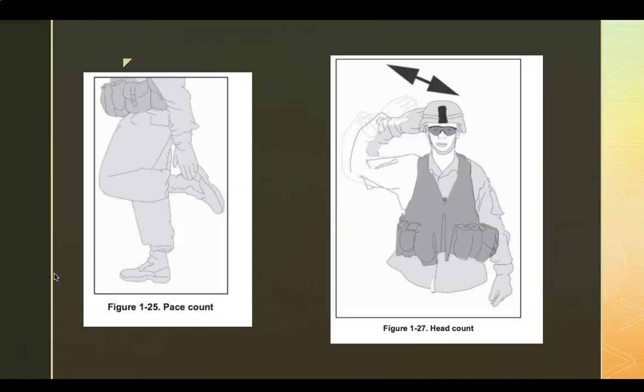Pace count. This is where they are checking their pace, so each formation has a person who keeps pace. Pace count is either when they get to a hundred meters or whatever they're counting, that's just a signal for it. Head count is when they need to get a head count of all the people, so they tap on top of the ACH.